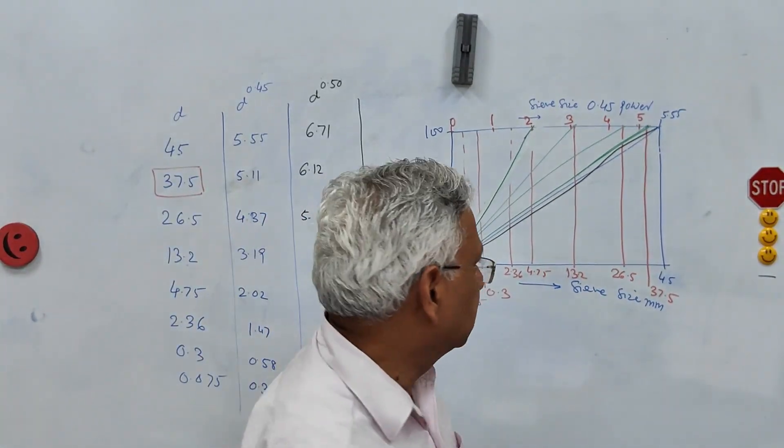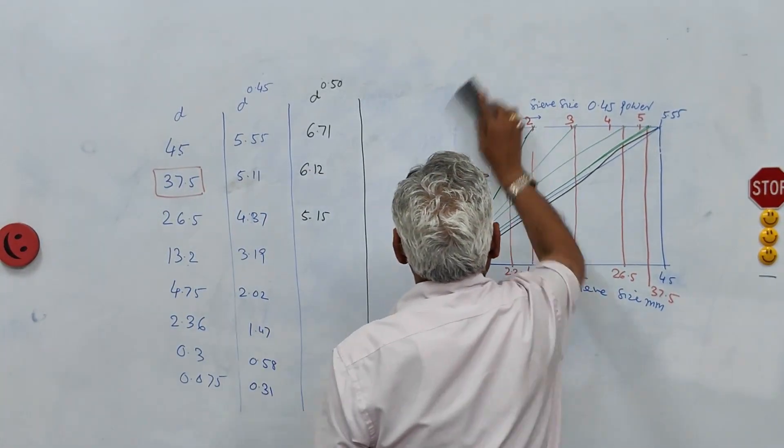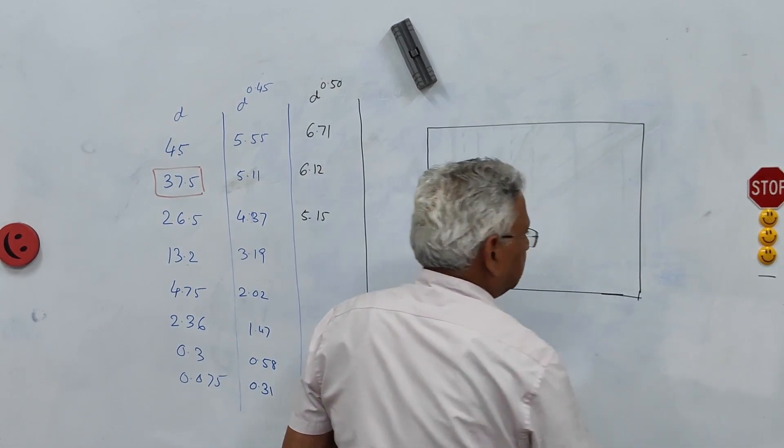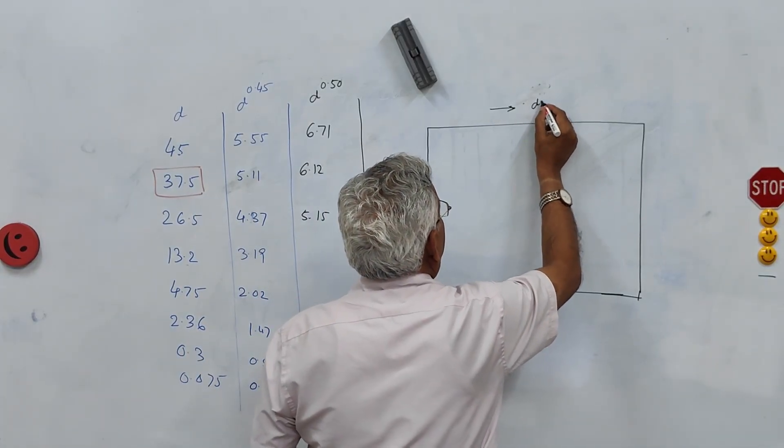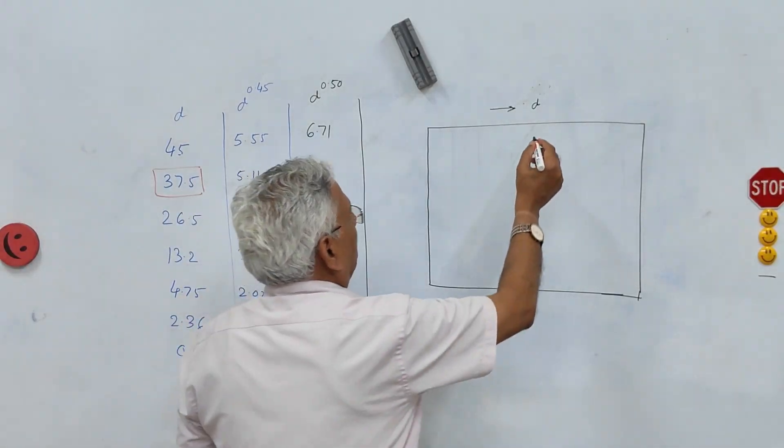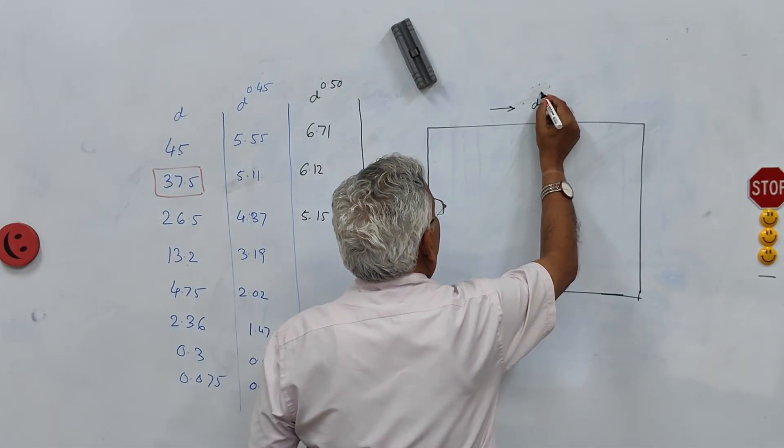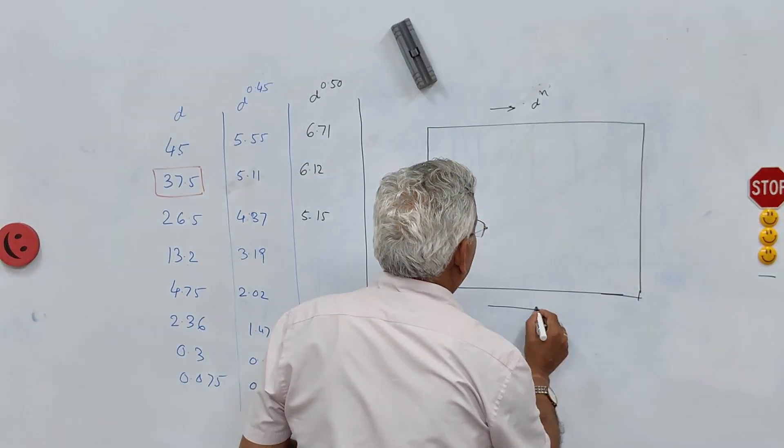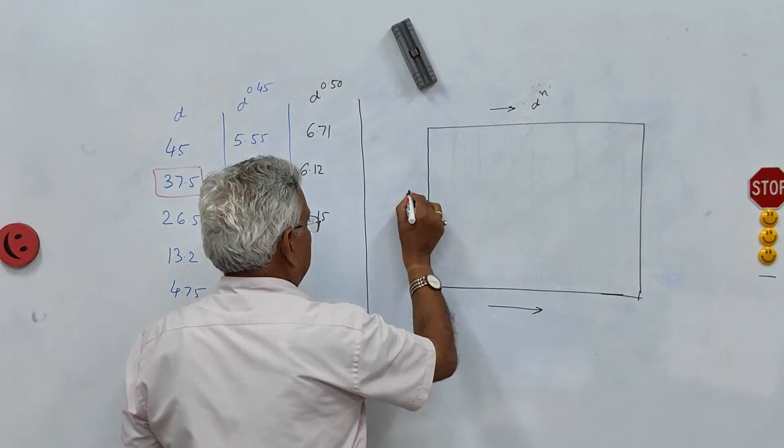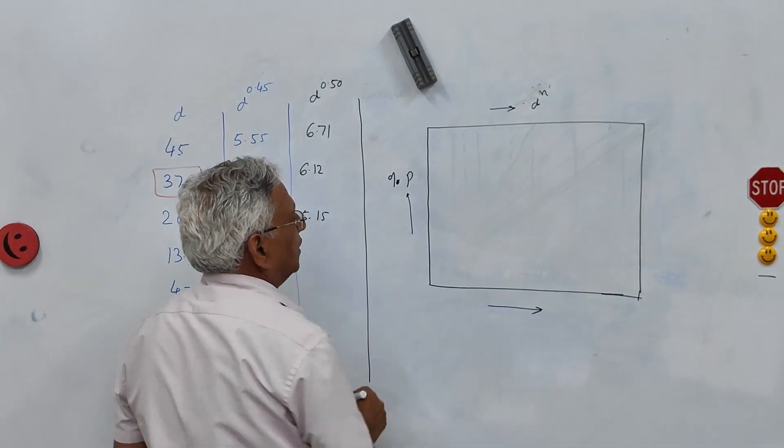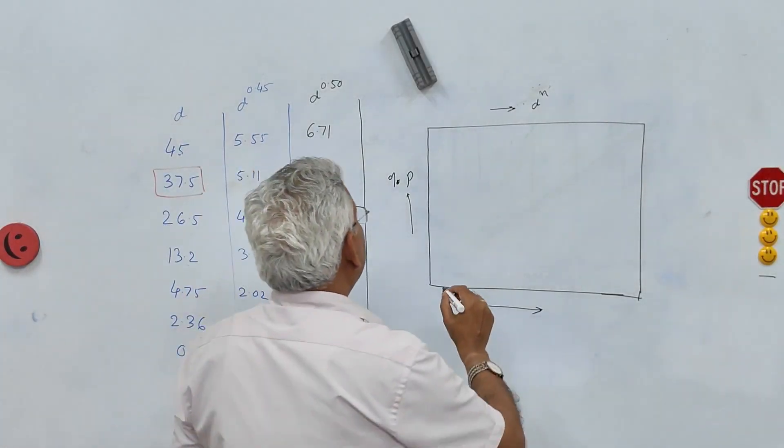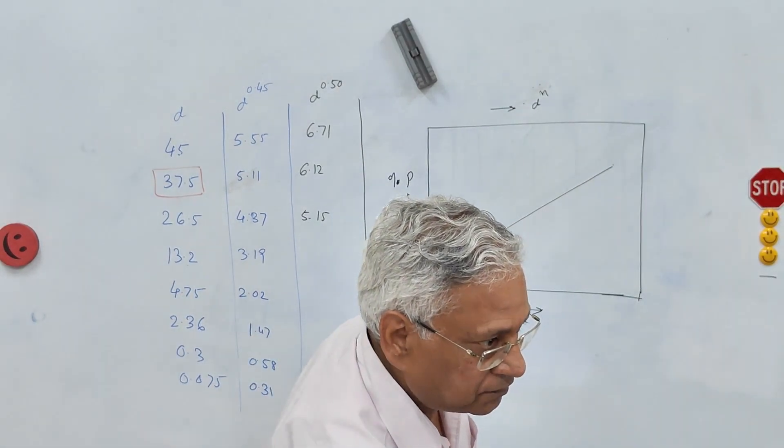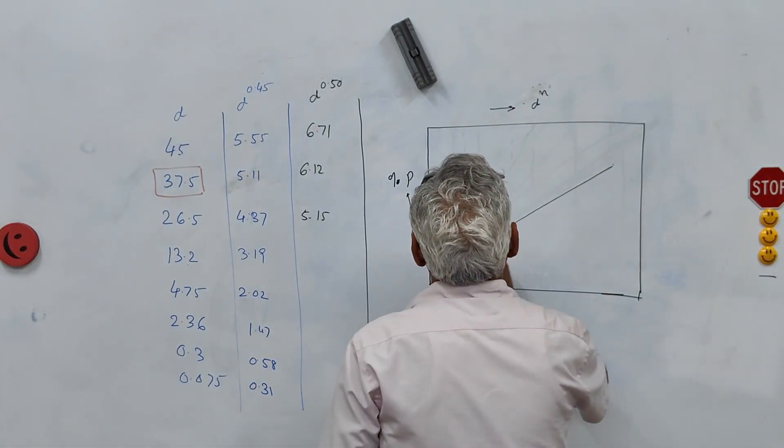Now if you compare these gradings you have a normal graph paper. On this axis you take d raised to the power either 0.45 or 0.5 and here you have the actual sieve sizes and here is the percent passing. Now this will be something like this. This is your 0.5 curve and this is your 0.45 curve.